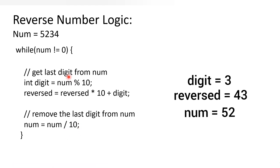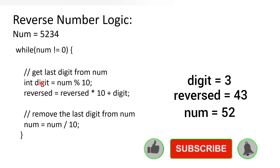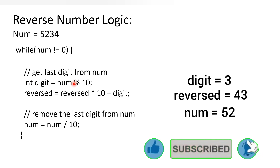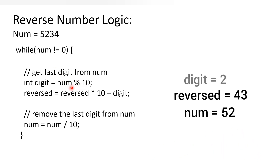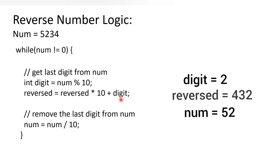We update the number again: 523 divided by 10 gives quotient 52. So number is now 52. 52 is not equal to 0, so we enter the loop. 52 modulus 10 gives remainder 2, so digit is 2. Reversed is 43, so 43 into 10 is 430, plus 2 gives 432. Our reversed number is now 432. We update num: 52 divided by 10 gives quotient 5.